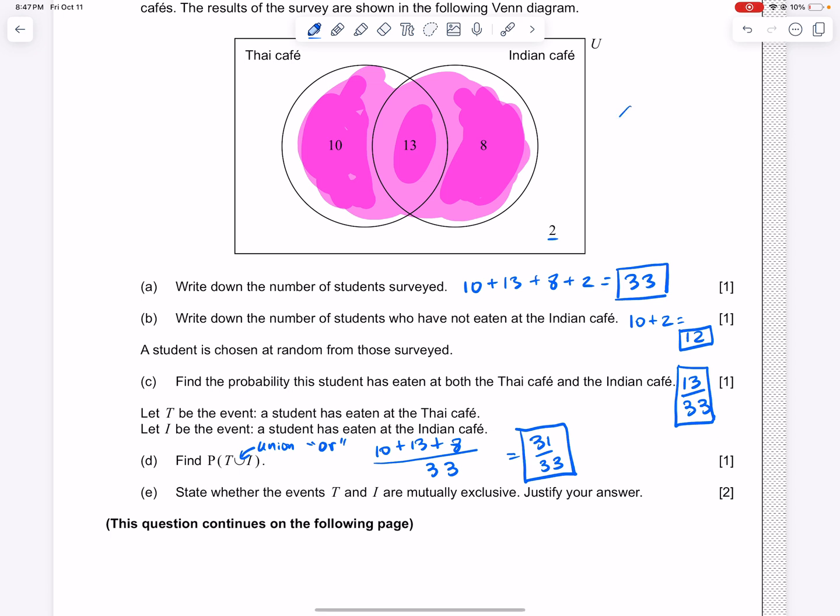That Venn diagram would look like this. They would not connect if they were mutually exclusive. So in other words, they are not mutually exclusive. And the reason that you'd want to give here is because 13 people went to both. And that's it.